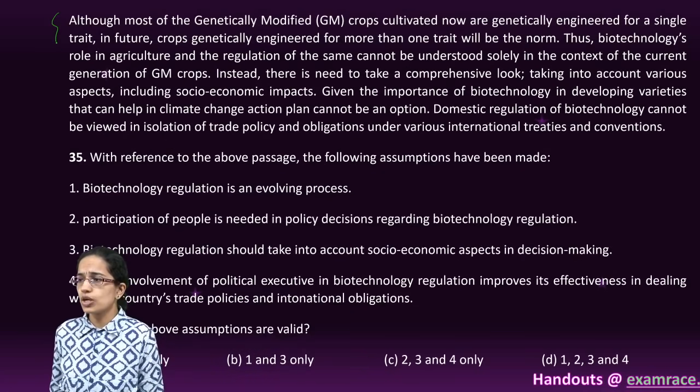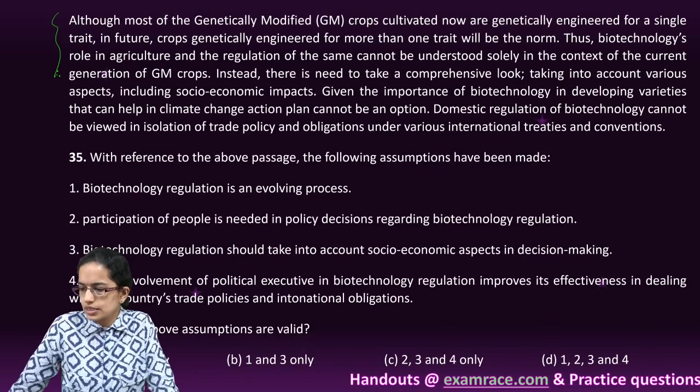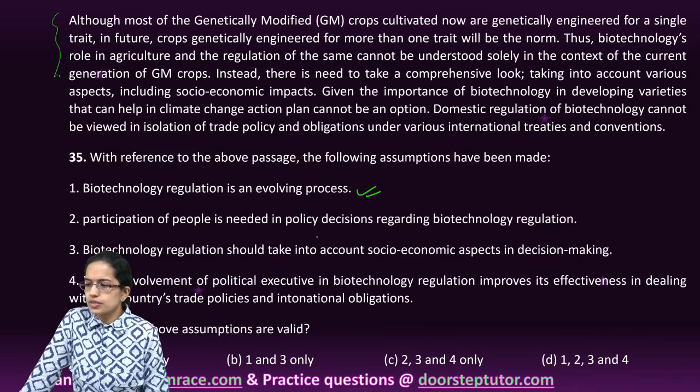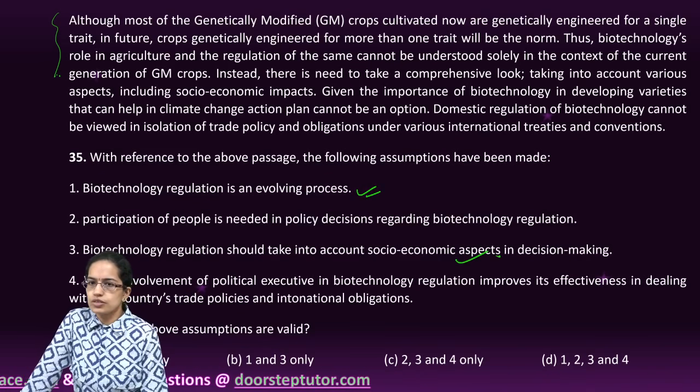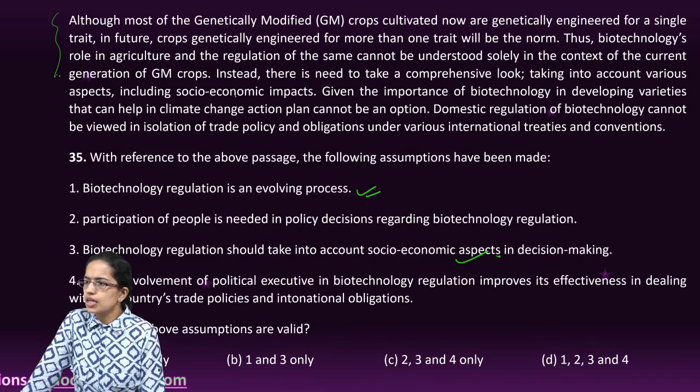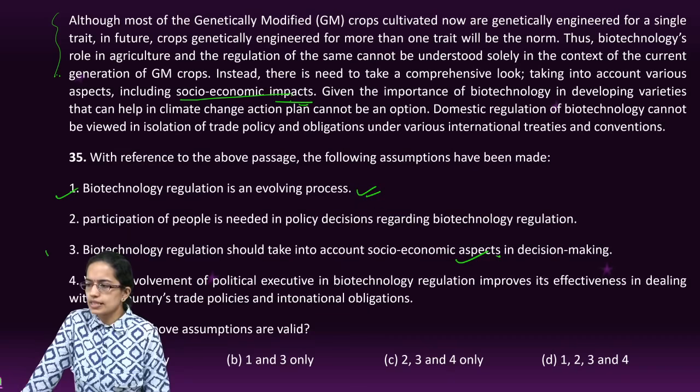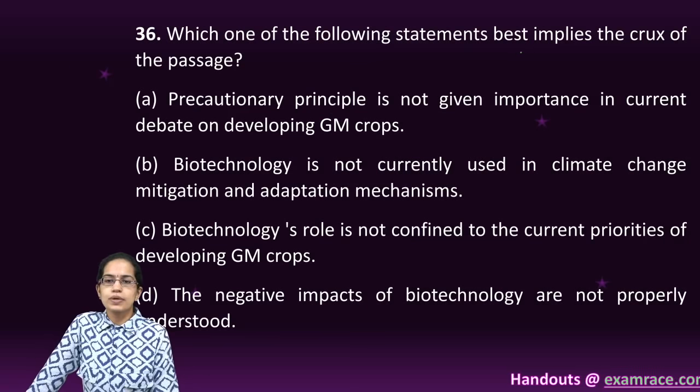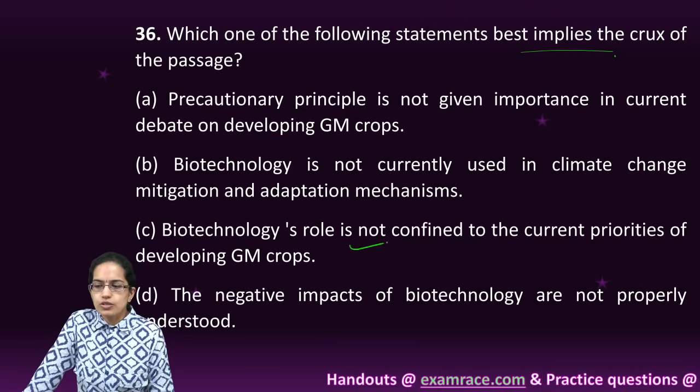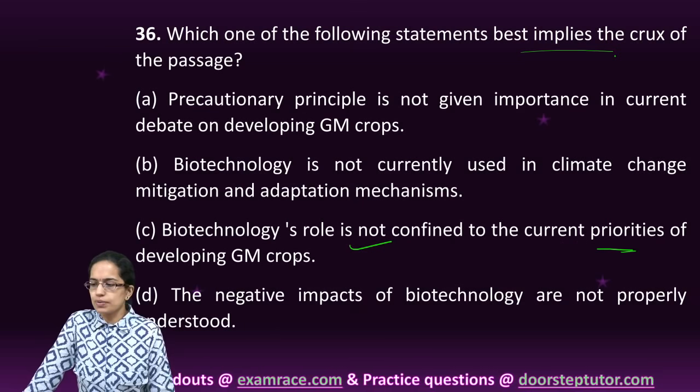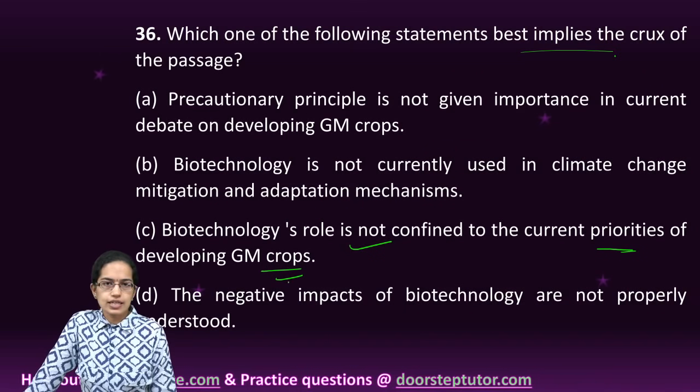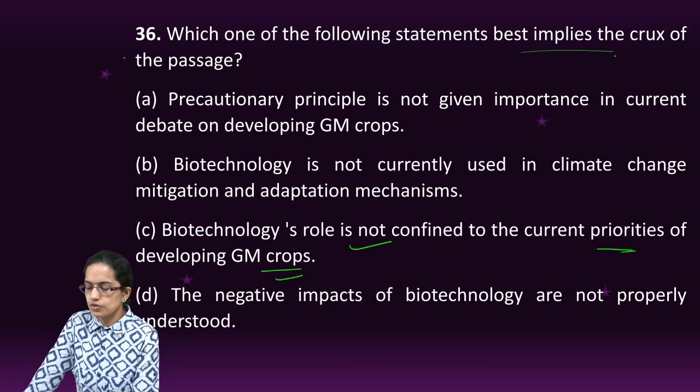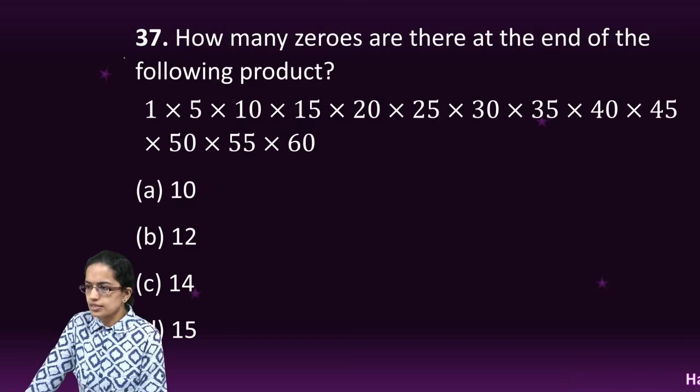The next question focuses on genetically modified crops and there were two questions in line with this. Biotechnology regulation is a constantly evolving process. So one and three are the right options. The next question says what is best implied from the passage: that biotechnology's role is not confined to the current priorities of the genetically modified crops, which is clearly given in the first line of the passage itself.